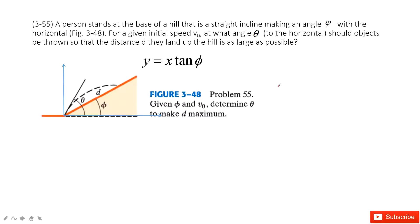It looks a little bit difficult, but now this will come together. The problem tells us there is a person standing at the base of a hill — this is the slope — and we know this slope makes an angle phi with the horizontal. The person throws an object for a given initial speed v0, and the angle of v0, theta, is given. We need to find theta so that the distance d up the hill is as large as possible.